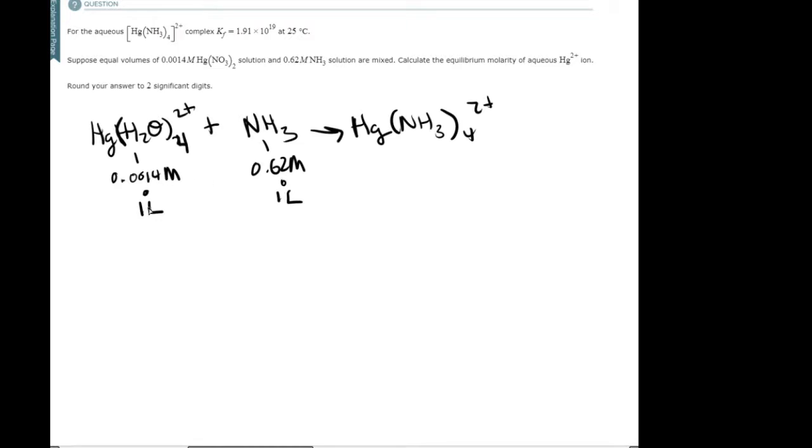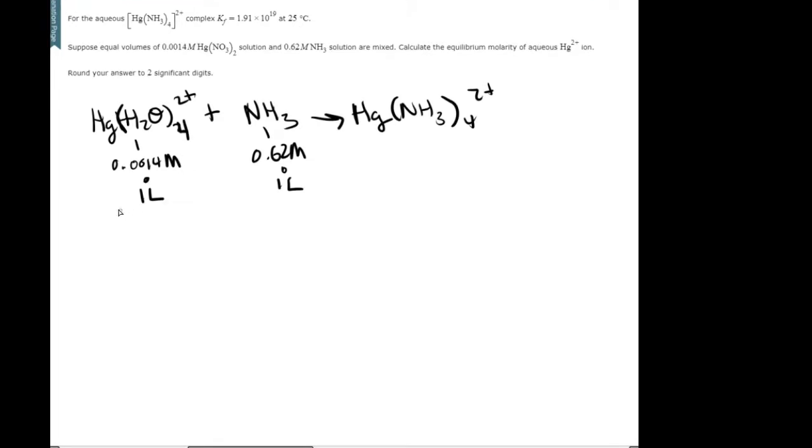So you multiply one liter times the molarity, which is moles over liter. So by multiplying it, you cancel out the liters to get your number of moles. So for this, you get 0.0014 moles. And for this one, you get 0.62 moles.